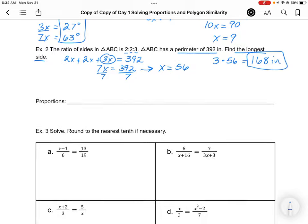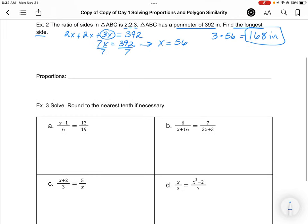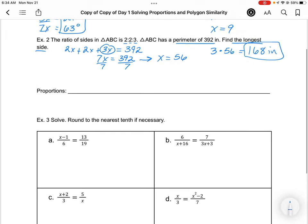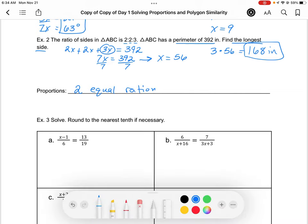You'll do some problems today where you have to use that extended ratio. This leads us to the idea of what a proportion is. Proportions are two equal ratios, like a over b equals c over d.